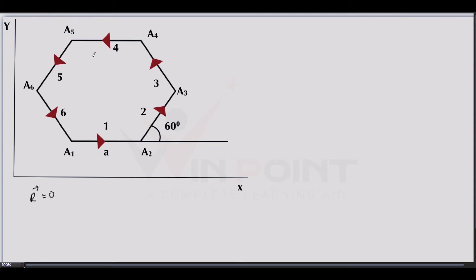The resultant of these six vectors, vector R, is equal to zero because it forms a closed shape. We need to find the resultant vector in terms of x-component and y-component.